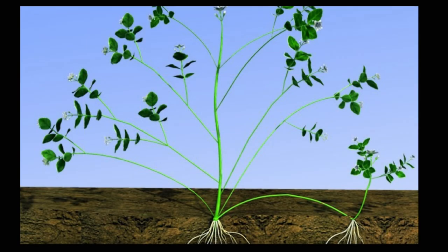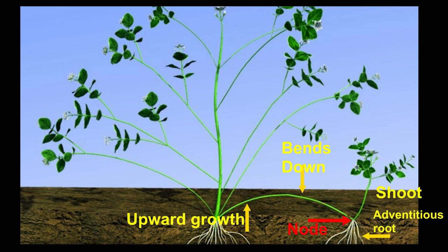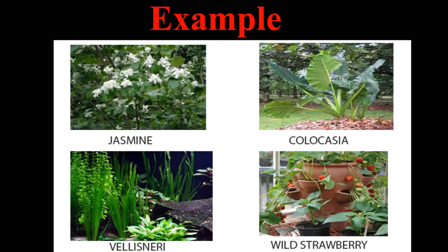Stolon: It is similar to a runner, but it does not run or grow horizontally on the surface of soil. It grows upwardly for some distance and then bends downwards. When it touches the soil, adventitious roots and shoots are formed and a child plant is grown. The common stolon-bearing plants are jasmine, colocasia, and whalish neri.